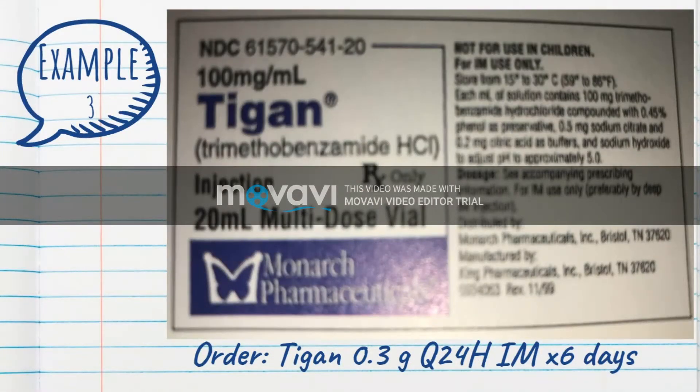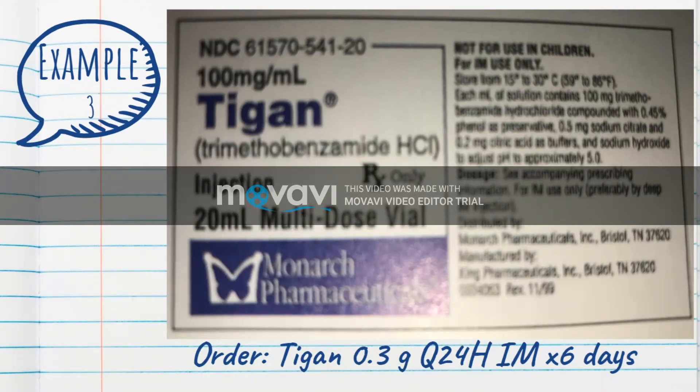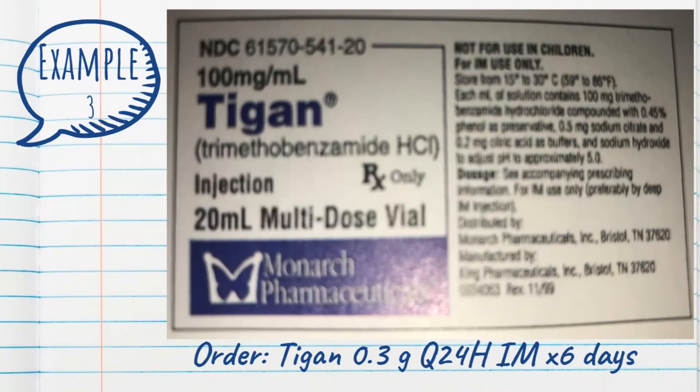Okay. So get yourself a piece of paper, and you're going to write this one down. TIGAN, we have trimethobenzamide, HCL, 100 milligrams per milliliter. The order says we need to give 0.3 grams every 24 hours, IM, times 6 days. So this adds an extra step. We have to be able to convert from grams to milligrams, or milligrams to grams.